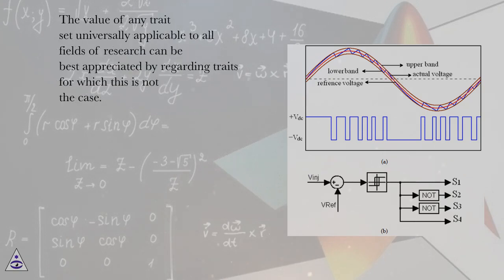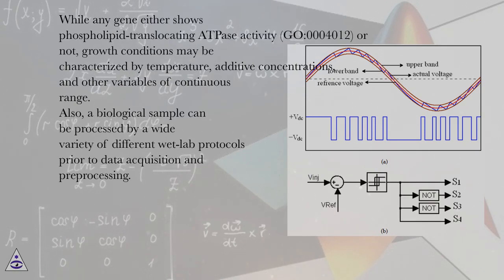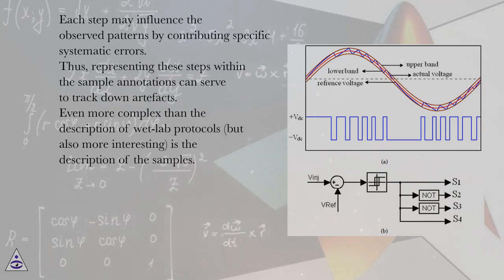The value of any trait set universally applicable to all fields of research can be best appreciated by regarding traits for which this is not the case. While any gene either shows phospholipid translocating ATPase activity (GO:0004012) or not, growth conditions may be characterized by temperature, additive concentrations, and other variables of continuous range. Also, a biological sample can be processed by a wide variety of different wet lab protocols prior to data acquisition and preprocessing. Each step may influence the observed patterns by contributing specific systematic errors.